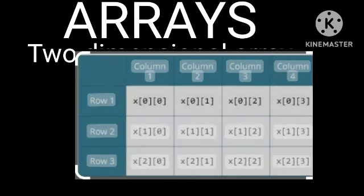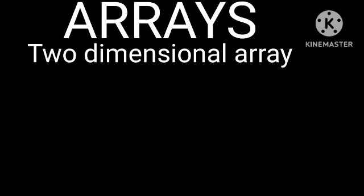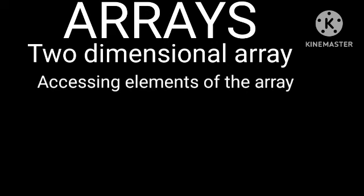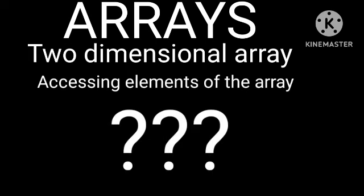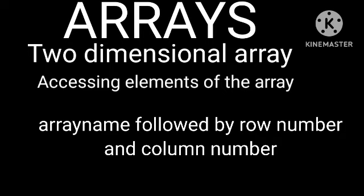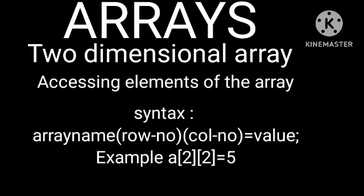In 2D arrays, the rows and column sizes are represented as shown in the diagram. Accessing elements: the individual elements are accessed using the array name followed by the row number and column number. Syntax: array_name[row][col] = value. For example: a[2][2] = 5.